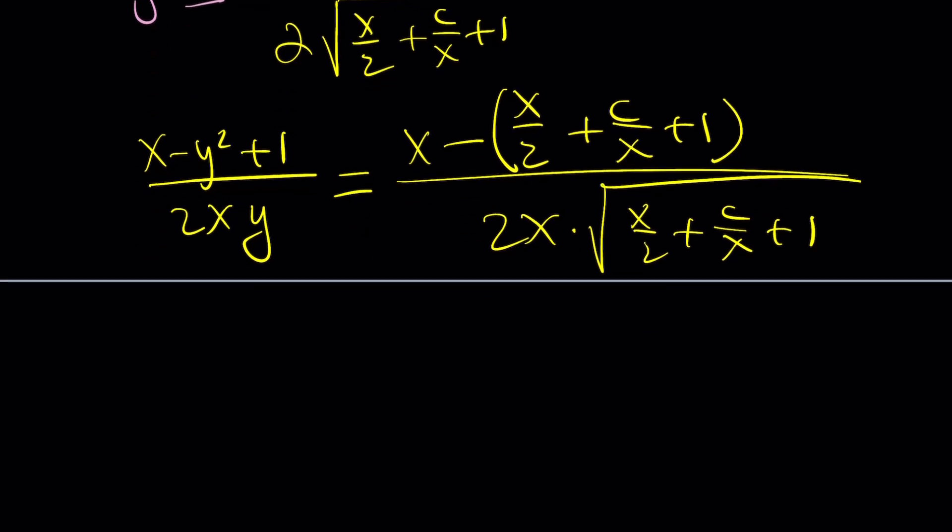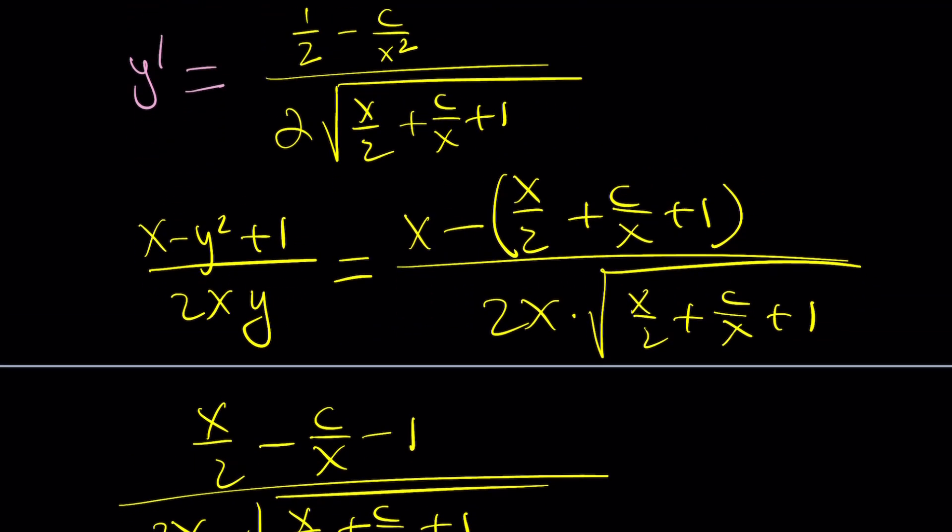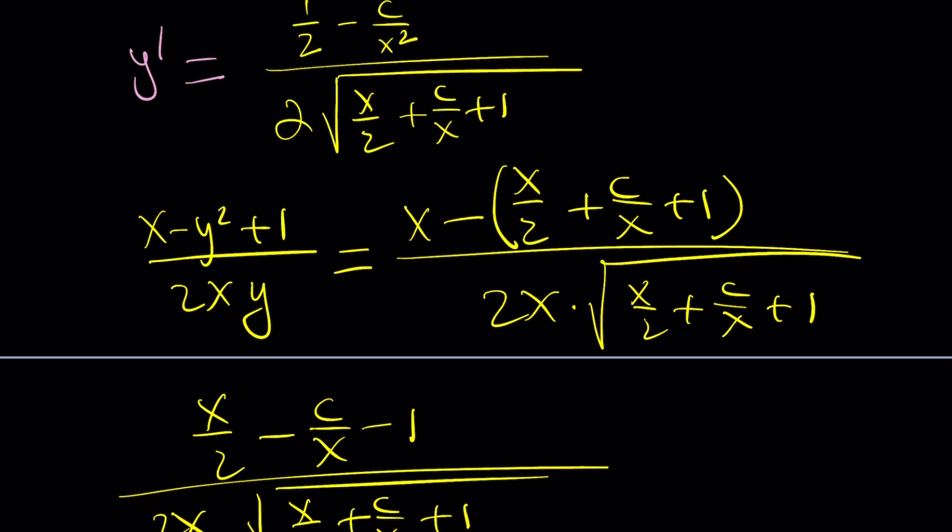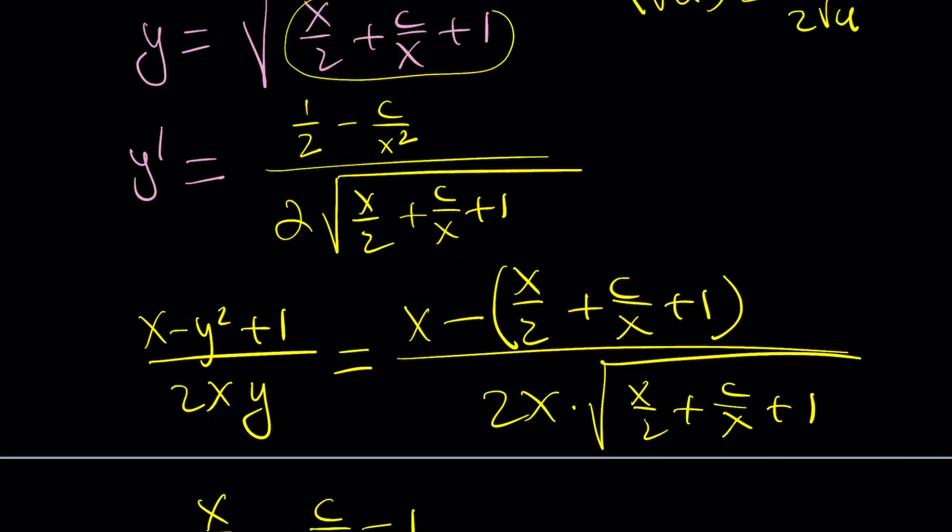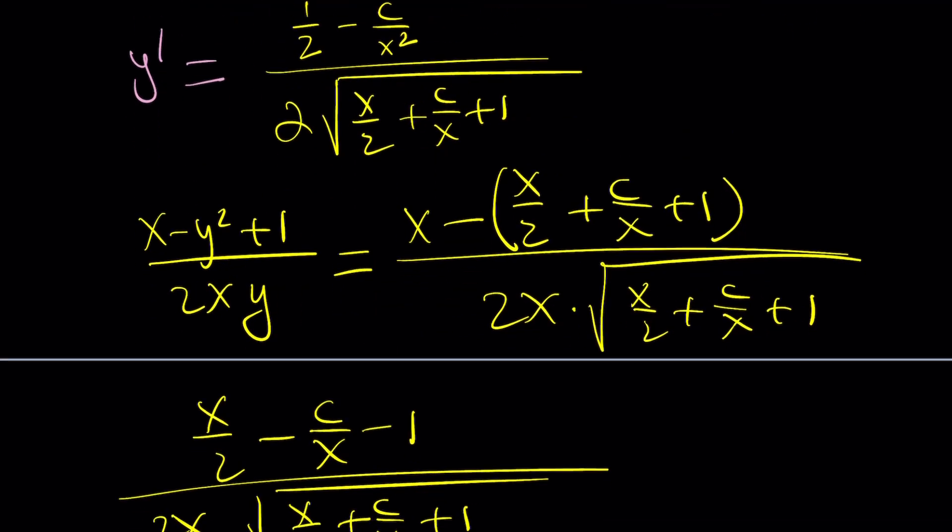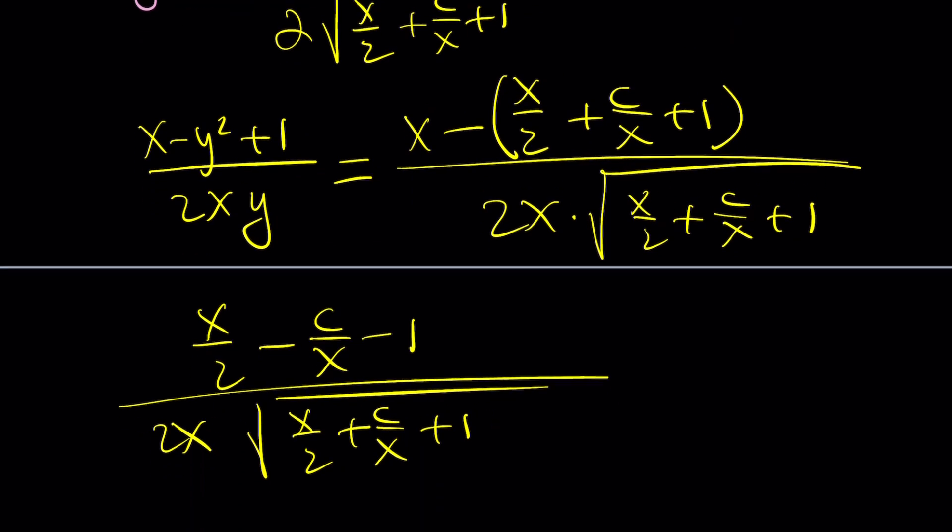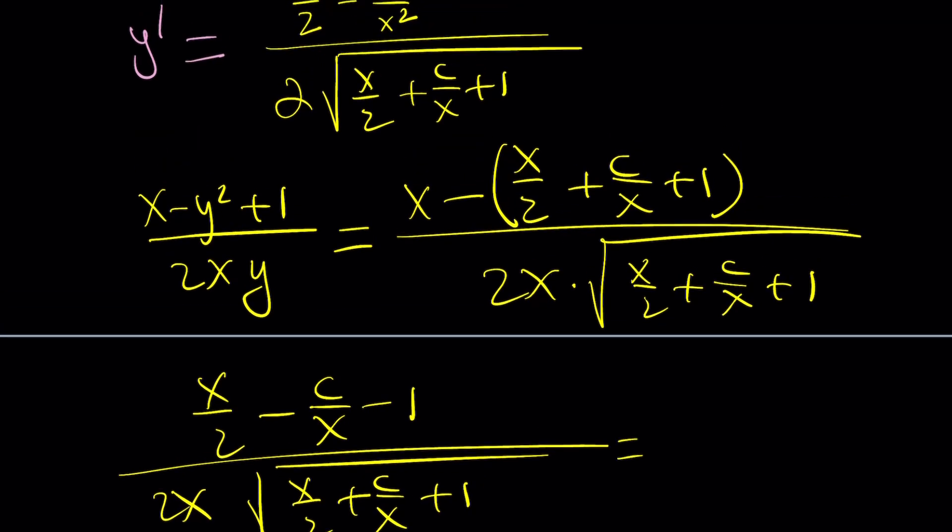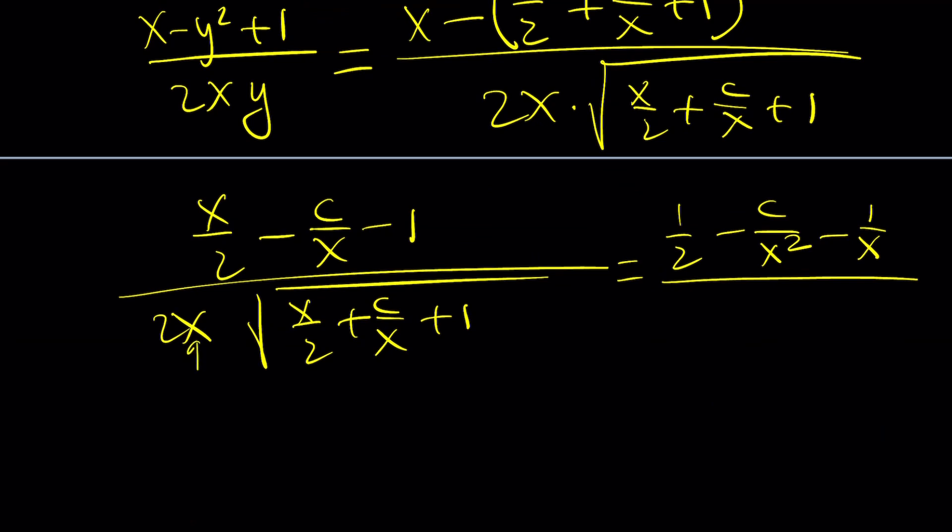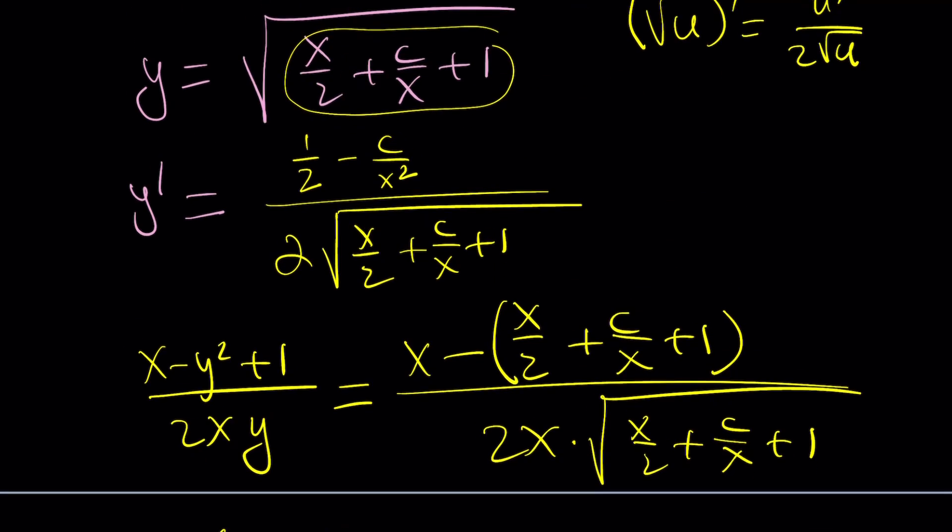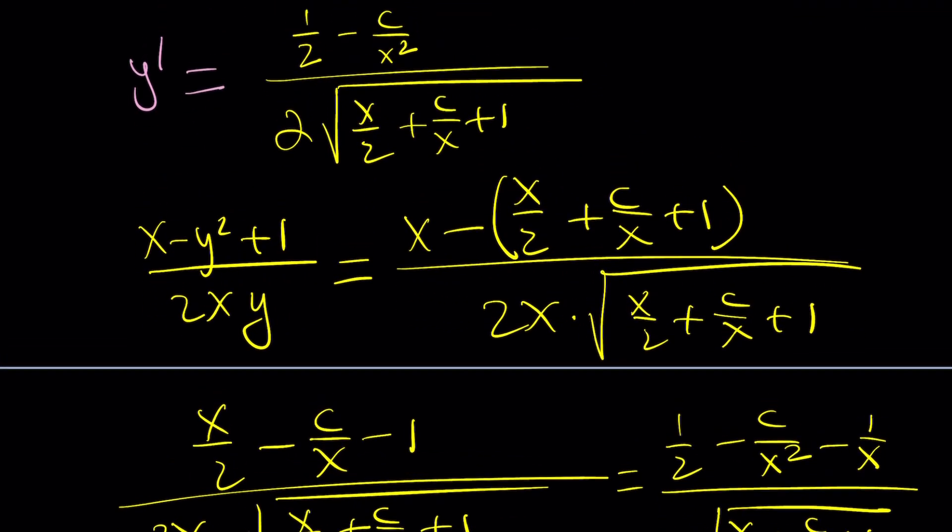Let's simplify this and see what happens. x - x/2 is going to be x/2 - c/x - 1 divided by 2x times (x/2 + c/x + 1). Now, here's what we're supposed to do. Is this going to equal the numerator? That's a good question. In this case, it should, because if you divide the top and the bottom by x,